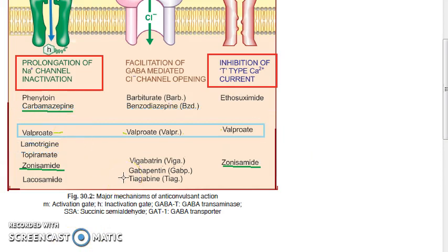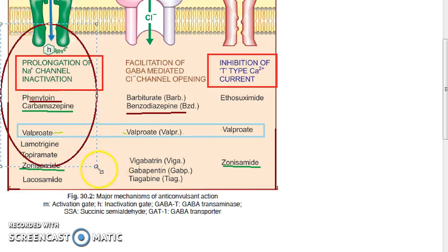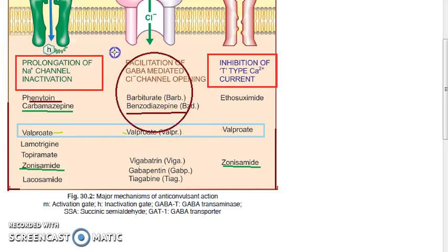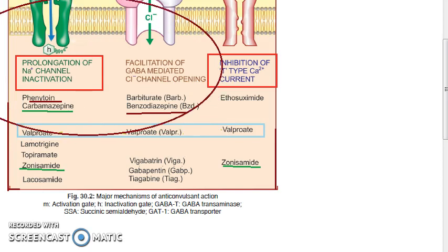In status epilepticus, you give benzodiazepines and phenytoin (fosphenytoin). Benzodiazepine facilitates GABA-mediated chlorine channel opening, while phenytoin only does one thing — inactivation of the sodium channel. So in status epilepticus, you are giving a combination: prolongation of the sodium channel inactivation and facilitation of the GABA-mediated chlorine channel opening.